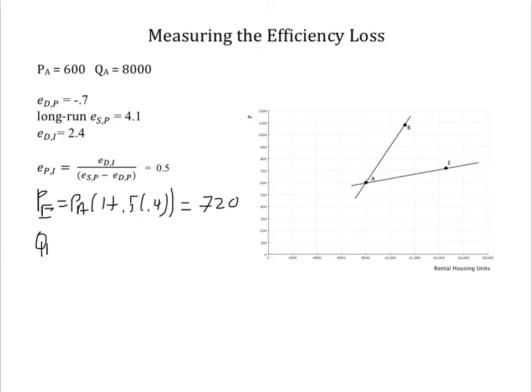The new quantity is the old quantity, the 8,000, times 1 plus the elasticity of supply, the long run elasticity of supply, 4.1, times the percentage change in price. So, that's just the 120 over the original 600, and that results in a new quantity of 14,560.